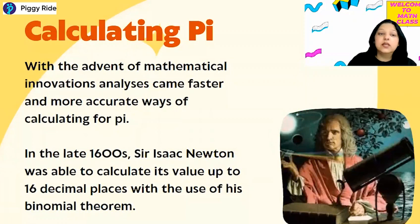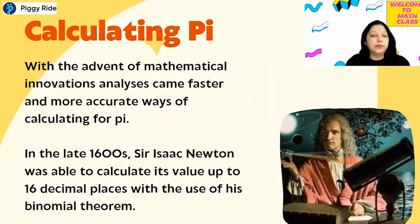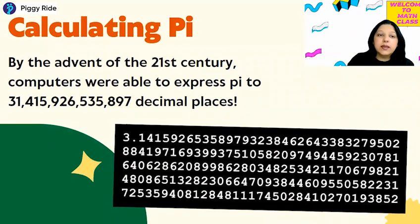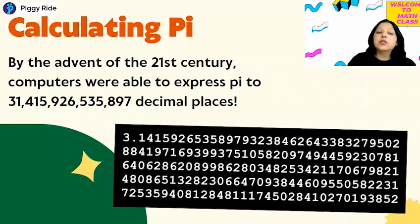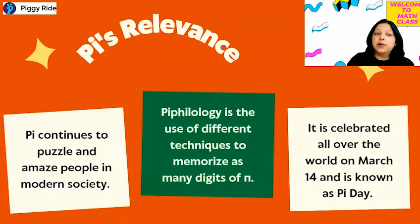In the late 1600s, Newton was able to calculate the value of pi up to 16 decimal places with the help of his binomial theorem. By the 21st century, computers could express pi up to so many decimal places. The value of pi is 3.1415926535897... This is the history behind pi, and it continues to puzzle and amaze us.